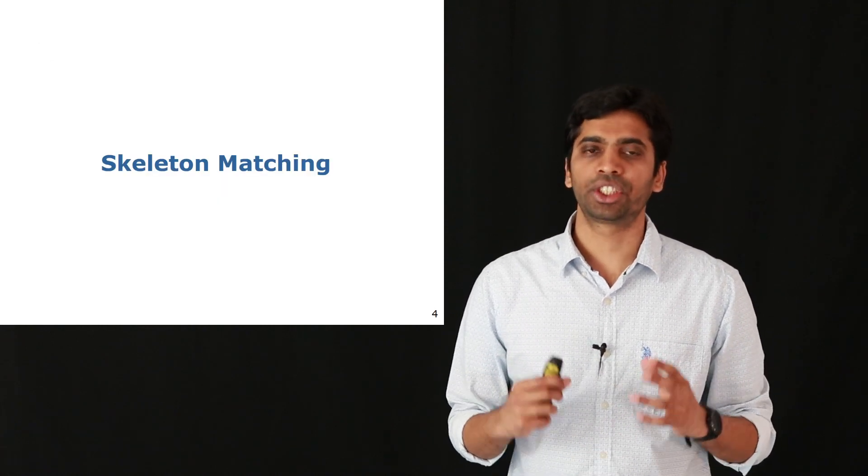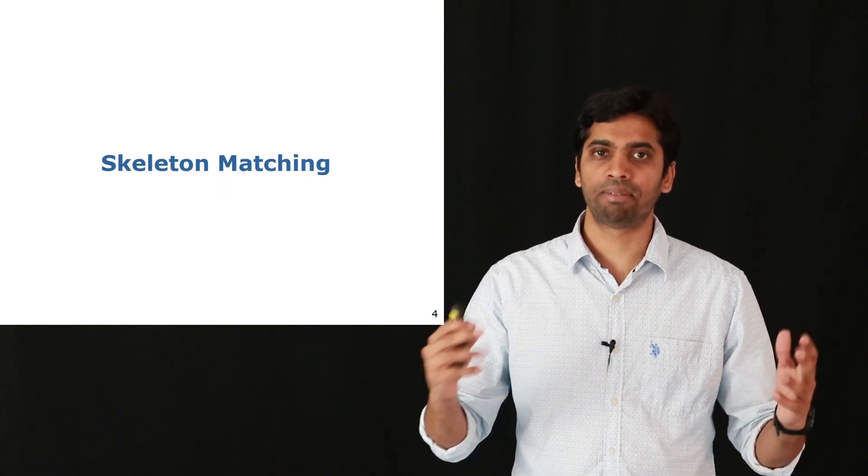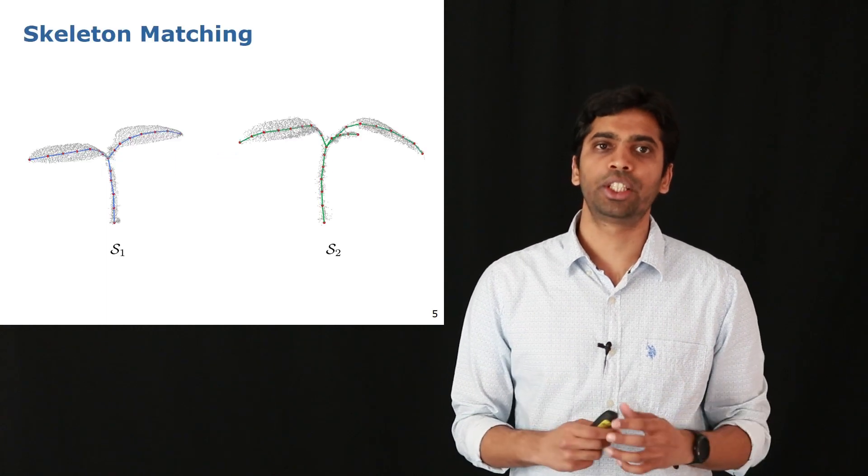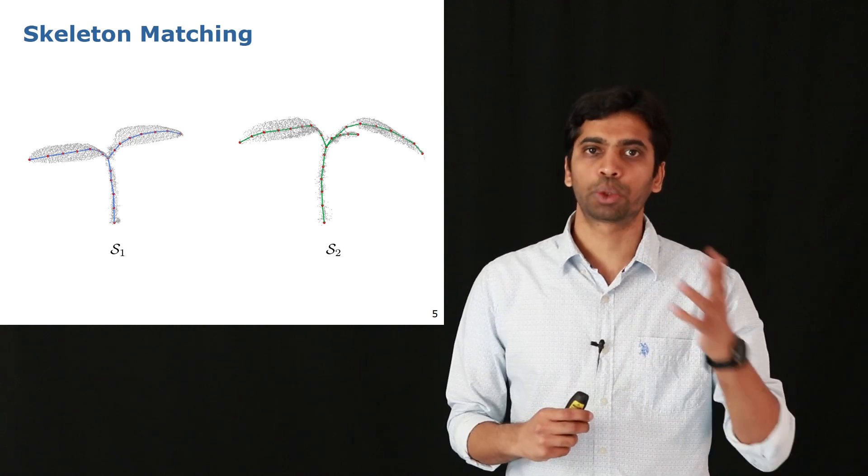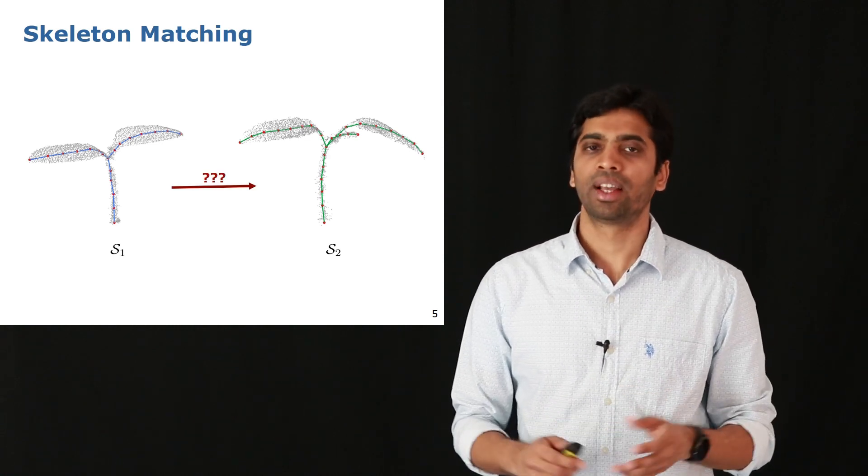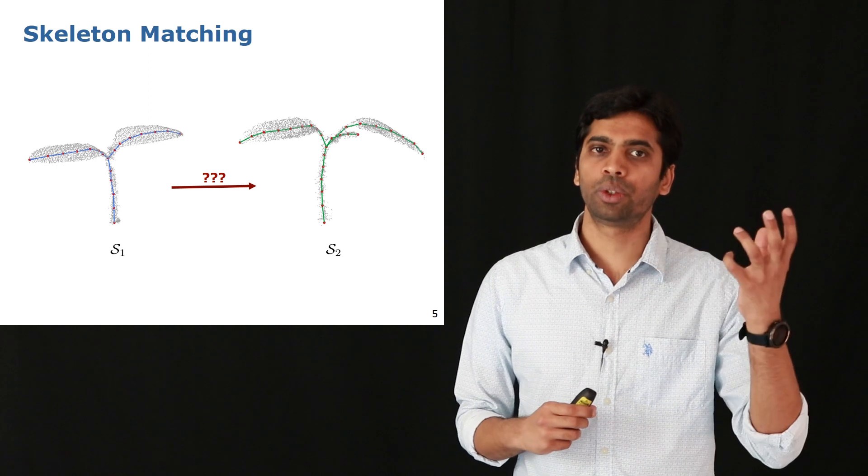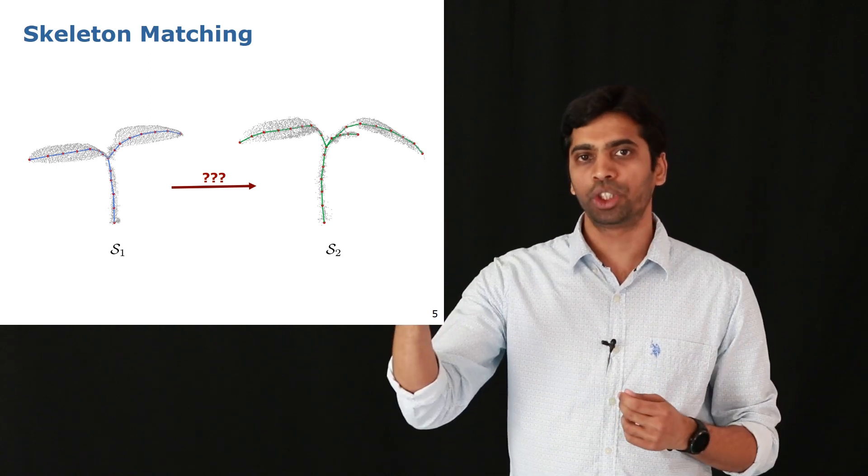The first step of our registration process involves the skeleton matching step. We take the two point clouds that we want to register and compute the corresponding skeletons S1 and S2, shown here, and then the question becomes which nodes in S1 match with which nodes in S2.